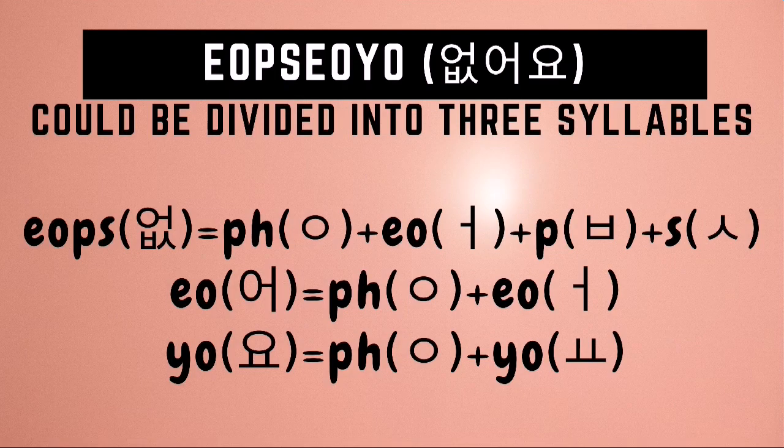The word opsoyo could be divided into three syllables: ops, o, yo. Ops is formed from the combination of the sounds of o, biyuk, and siyot, with a no-sound iang at the first position of the syllable. O is just the sound of o itself with a no-sound iang at the first position of the syllable. Yo is just the sound of yo itself with a no-sound iang at the first position of the syllable.